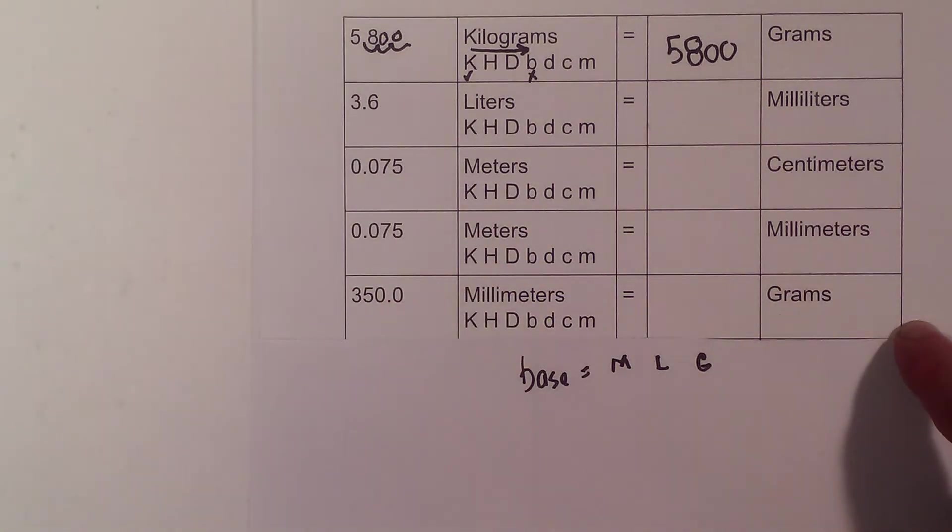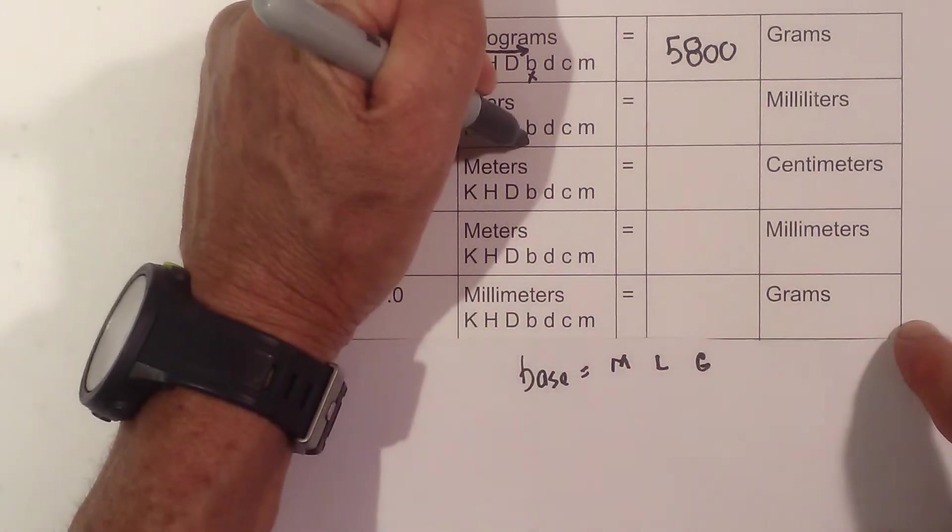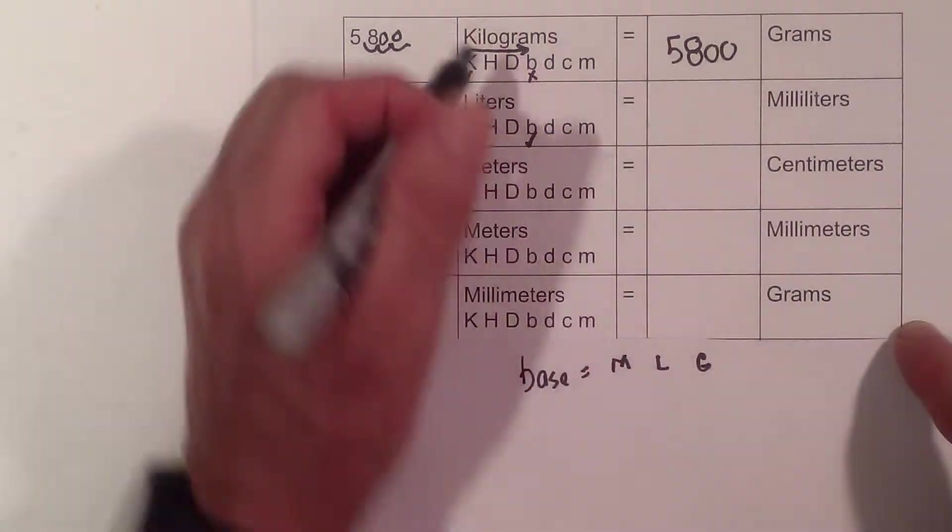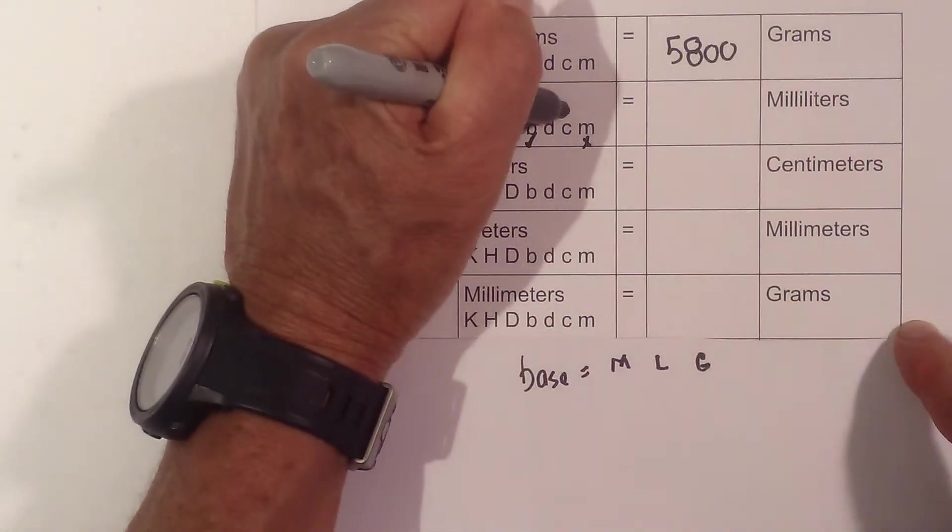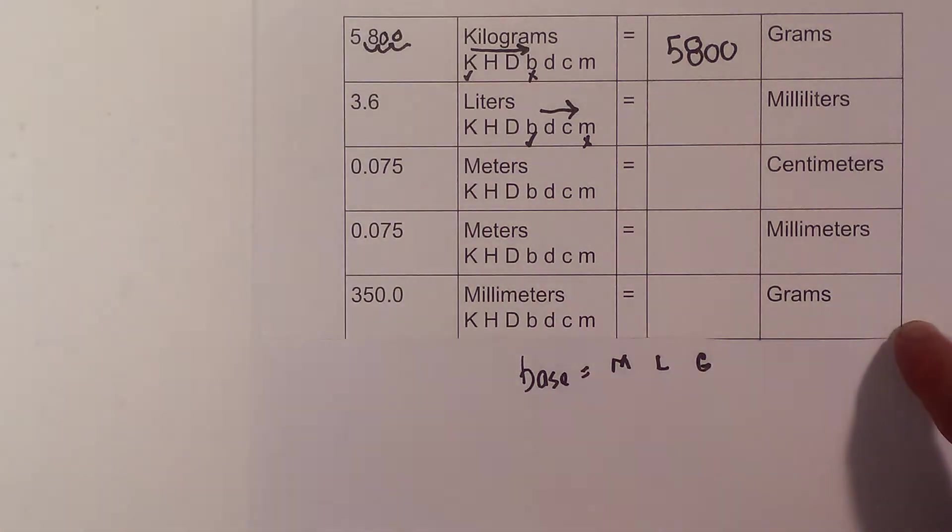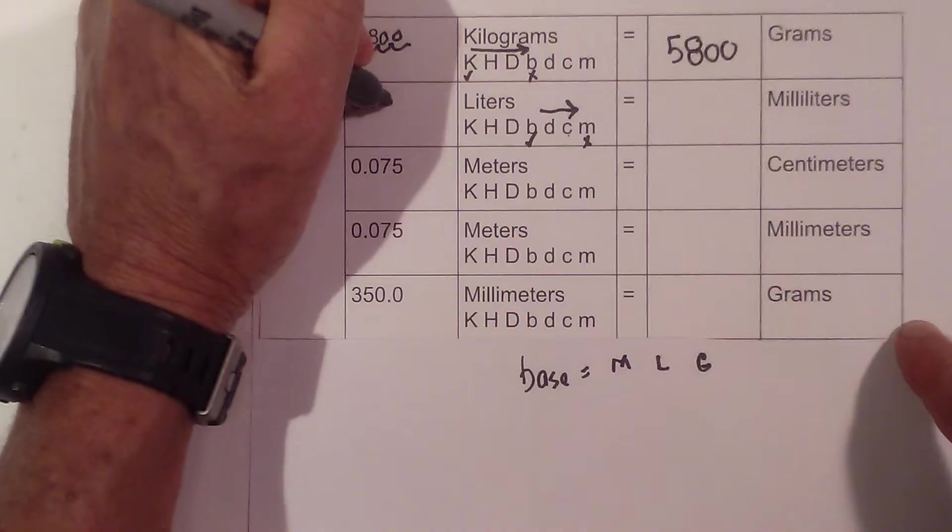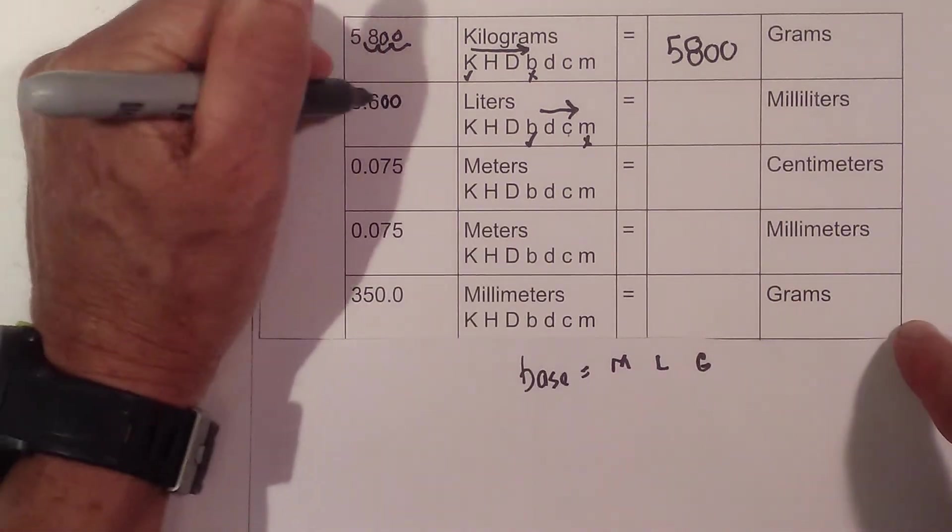3.6 liters equals how many milliliters? Liters is one of my base units, so I put a check there. I'm going to milliliters, which is here—I put an X. I'm going from the check to the X, so I count one, two, three. I'm adding three decimal places, so I go one, two, three.